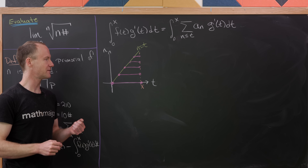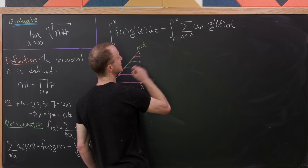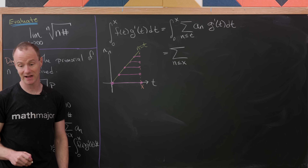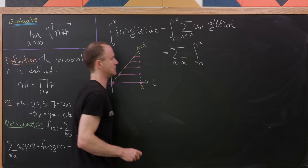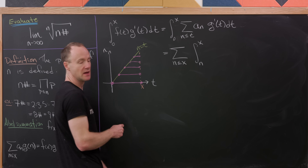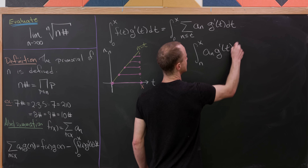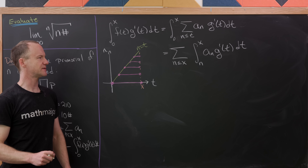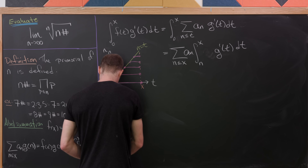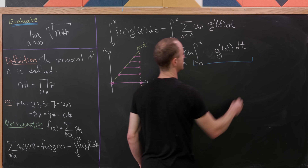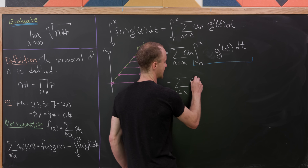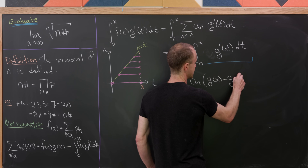That picture should hopefully make it clear how to change the summation and integration. So observe that now it's going to look something like this: we're going to take n less than or equal to x, because now n will go from 0 up to x. And then we're going to be integrating from little n up to x — that's the value of t. Notice t can go from n up to x after changing this order. And then we're going to have an a_n here and a g'(t) dt.